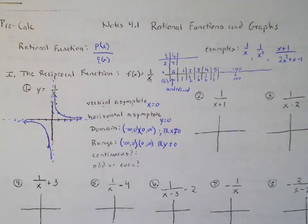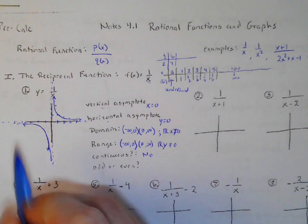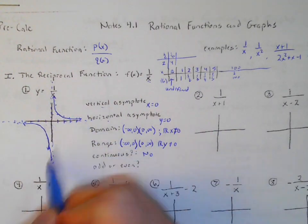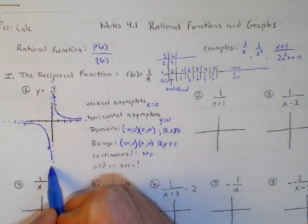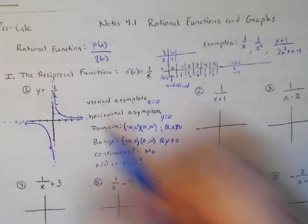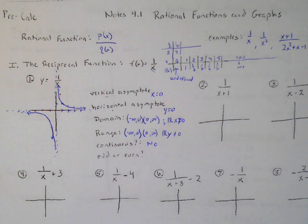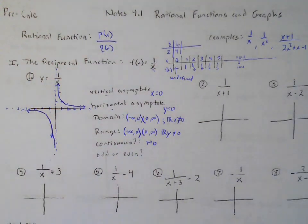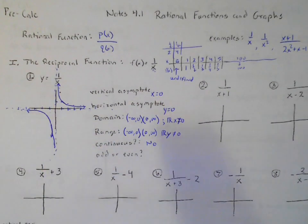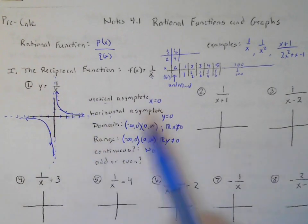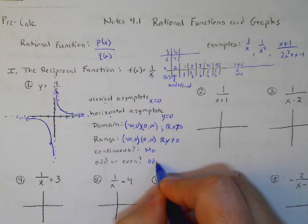Is it continuous? No — it's continuous here and continuous there, but right here I have to take my pencil off and jump, so it's discontinuous. And is it odd or even? If it was even, it's reflected across the y-axis. If it's odd, it's reflected across the origin. This is an odd function.